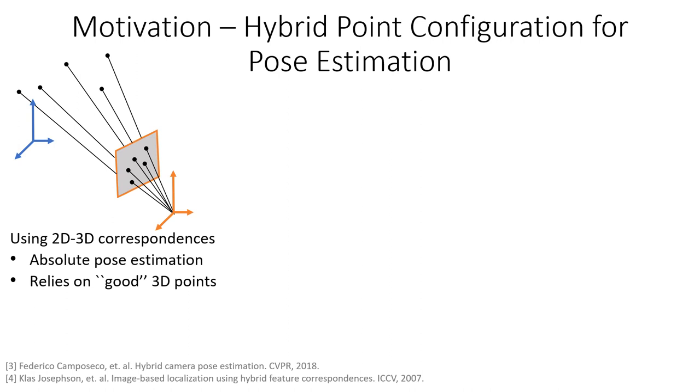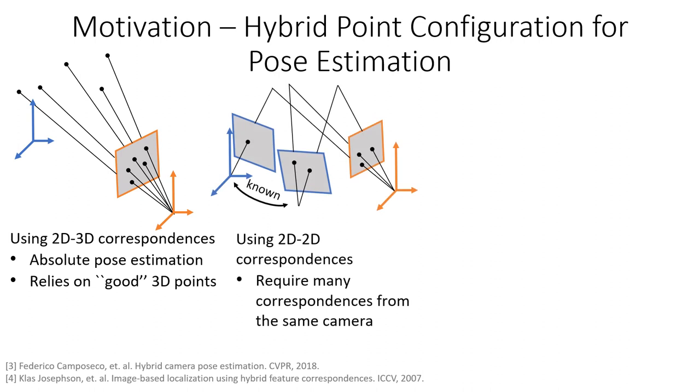On the other hand, 2D-2D point correspondences can also be used to register a pinhole camera. In this case, the minimal solvers tend to have large templates and therefore can be impractical for real-world applications.